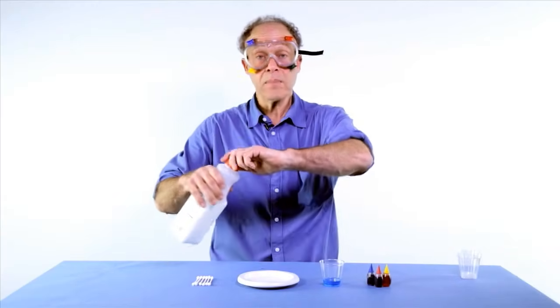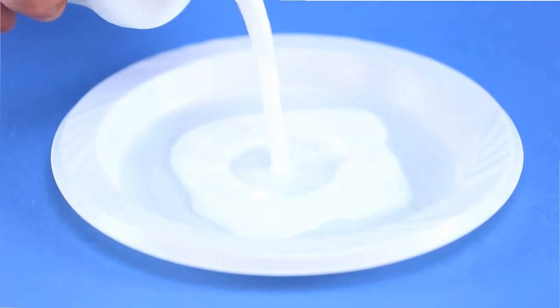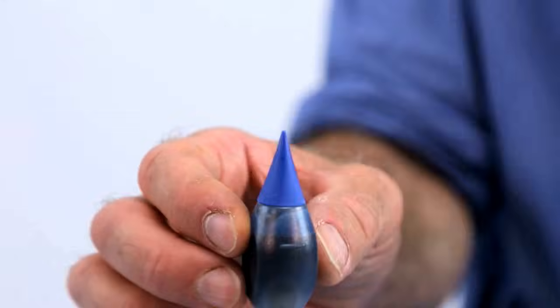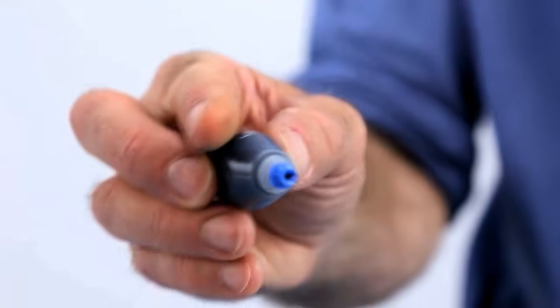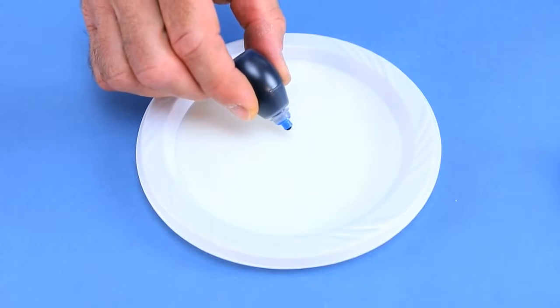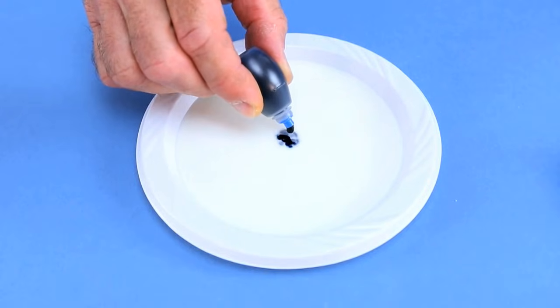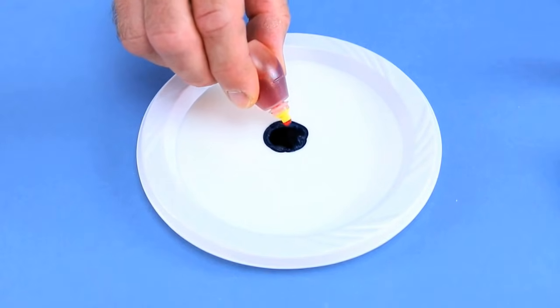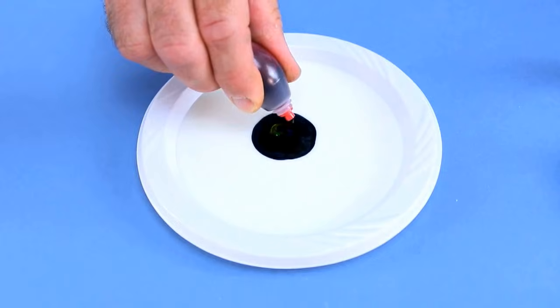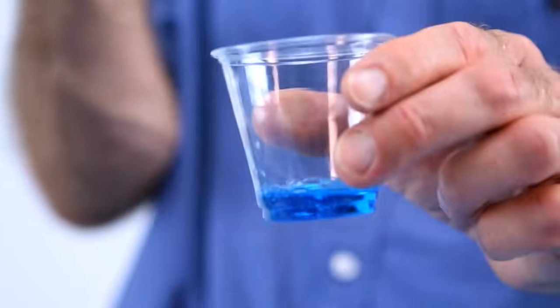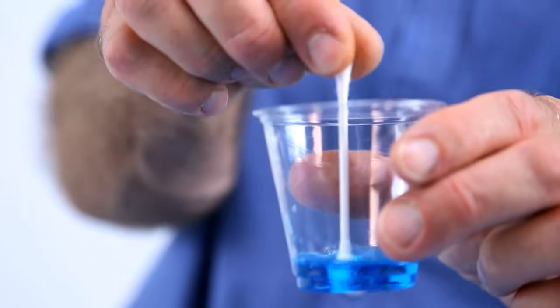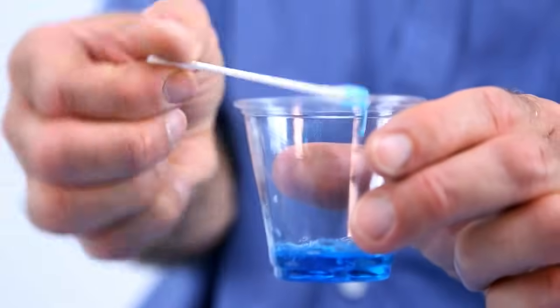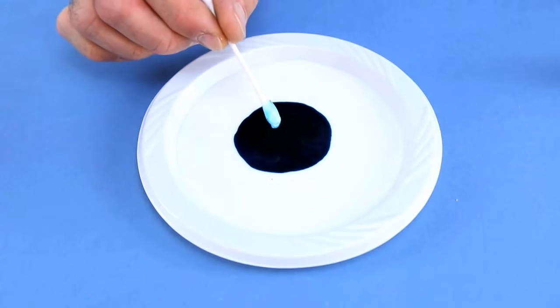All you need to do is take the milk and pour it into your plate and then take your food coloring, add maybe two drops to the center of each color using blue, yellow, and then red. Then you take your dish detergent and a cotton swab or q-tip and you put some detergent right in the center.